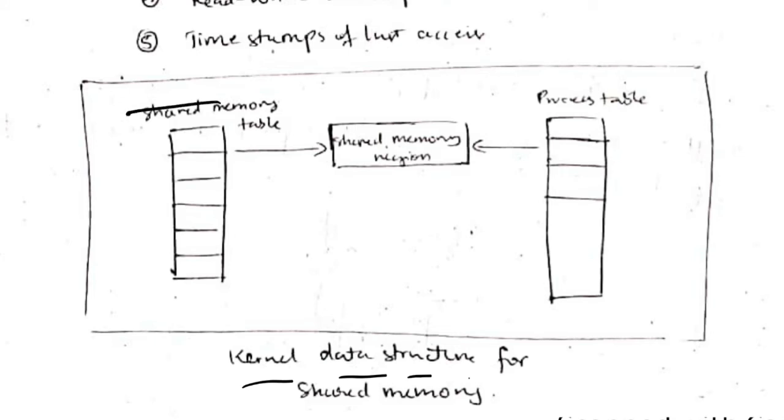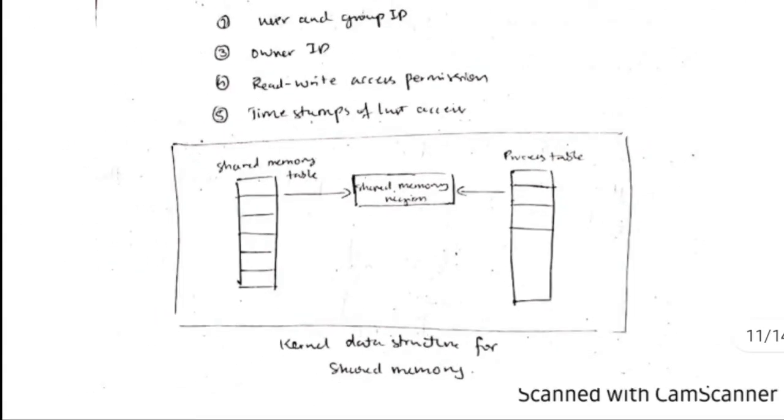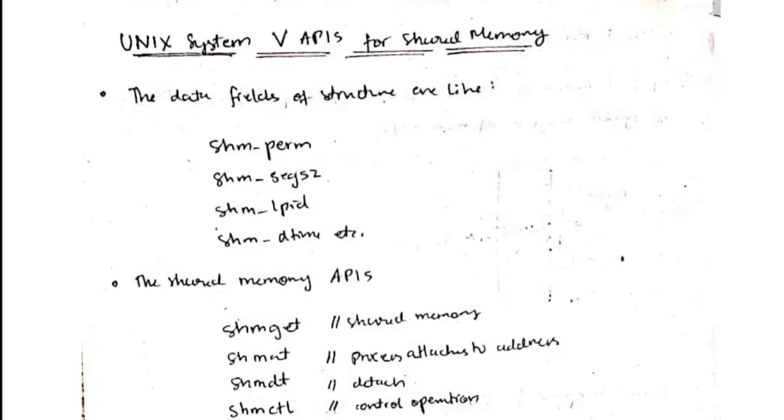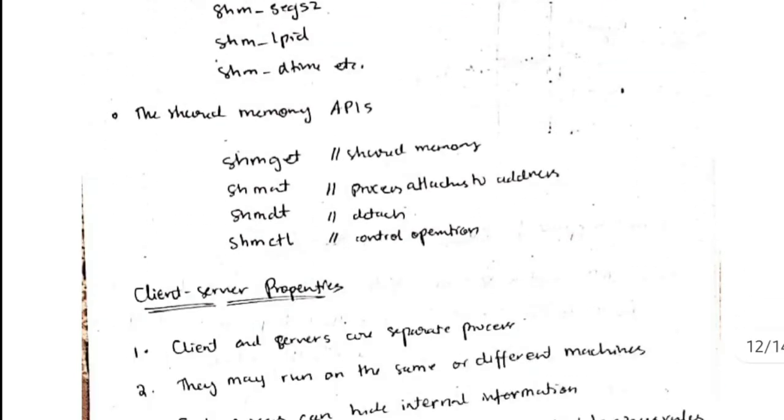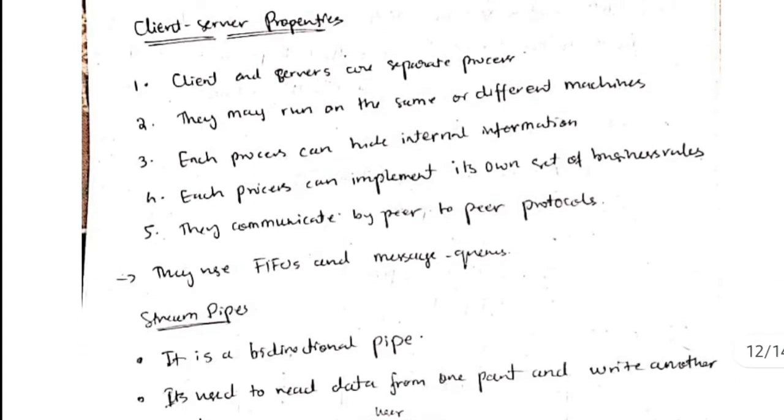We have the shared memory table and the shared memory region between two processes and this is the process table. Kernel handles the shared memory effectively. Data fields are like permissions, size, LPID, and time, and the APIs are used to open shared memory, detach, or control operation.